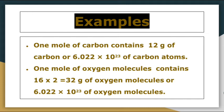One mole of carbon contains 12 grams of carbon, meaning 6.022 × 10²³ carbon atoms are present in 12 grams of carbon. One mole of oxygen molecule contains 32 grams of oxygen, which means 6.022 × 10²³ oxygen molecules are present in 32 grams of oxygen.